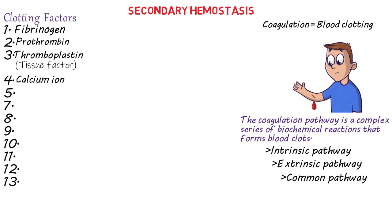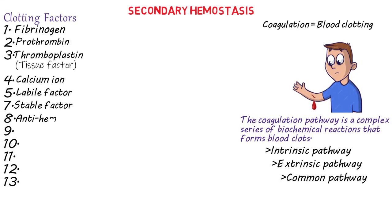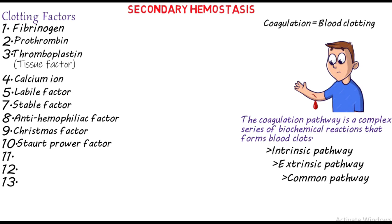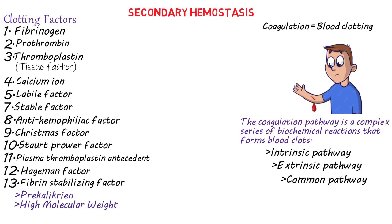Clotting factor 1 is fibrinogen, factor 2 is prothrombin, factor 3 is thromboplastin or tissue factor, factor 4 is calcium ion, factor 5 is the labile factor, factor 7 is the stable factor, factor 8 is anti-hemophilia factor, factor 9 is Christmas factor, factor 10 is the Stuart-Prower factor, factor 11 is plasma thromboplastin antecedent, factor 12 is Hageman factor, and factor 13 is fibrin stabilizing factor.